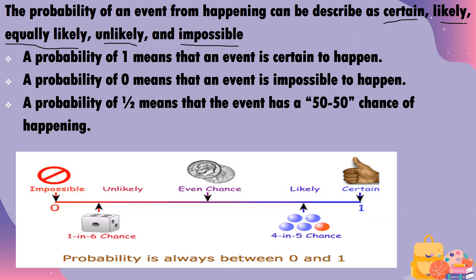A probability of zero means an event is impossible. For example, if we have 10 black marbles in the bag and you're asked for the probability of getting a white marble, the answer is zero because there is no white marble. For one-half or 50-50 chance, the best example is tossing a coin — heads and tails have an equal chance of coming out.